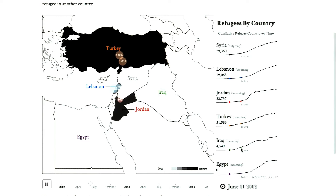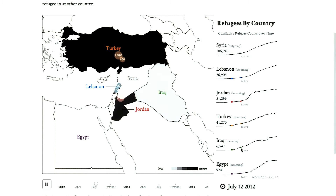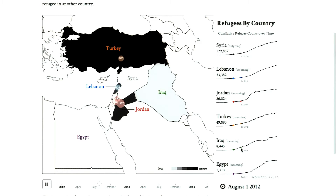Remembering back to our spectrum, we see here that this is an appropriate use of an author-driven visualization. The author is trying to impose a strict ordering — the ordering being time — and wants us to see how the refugees have spread out between the years of 2012 and 2014.